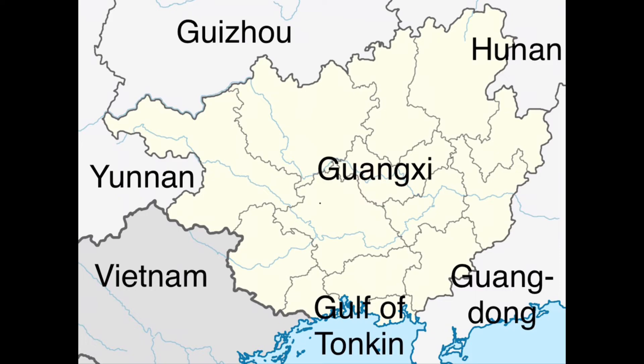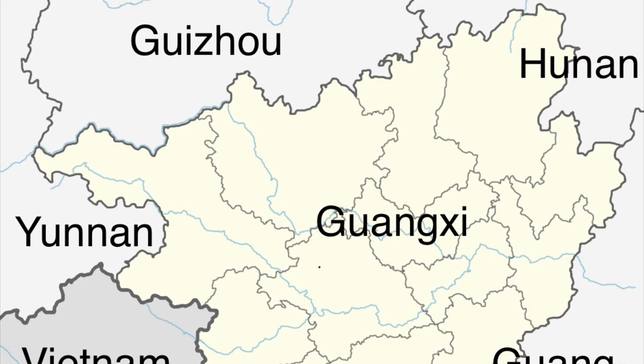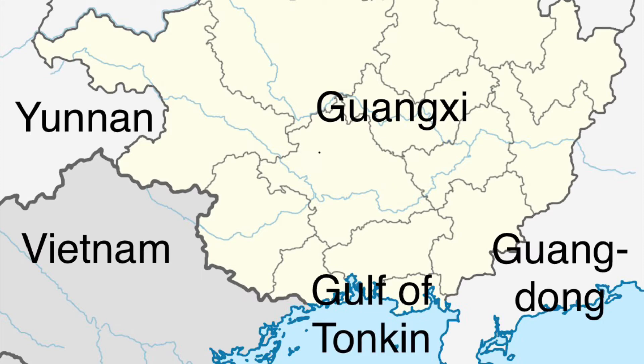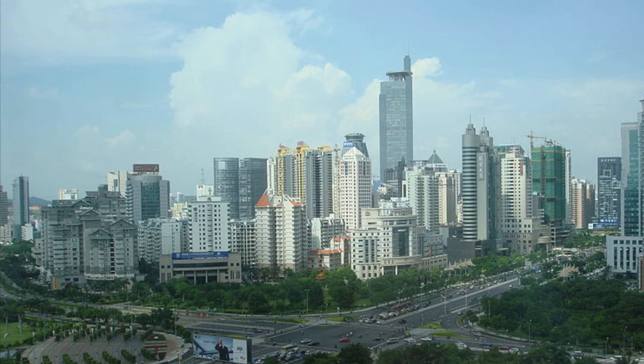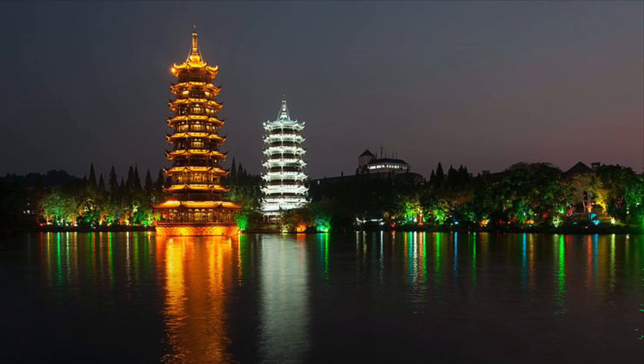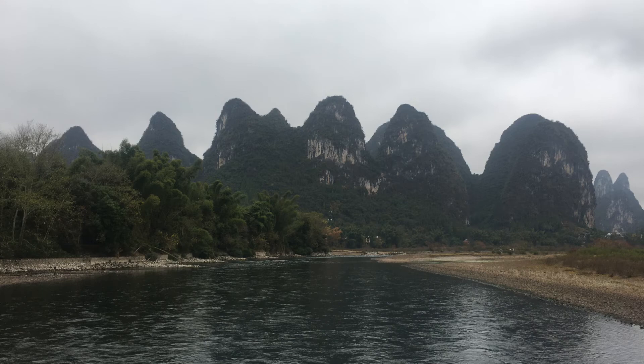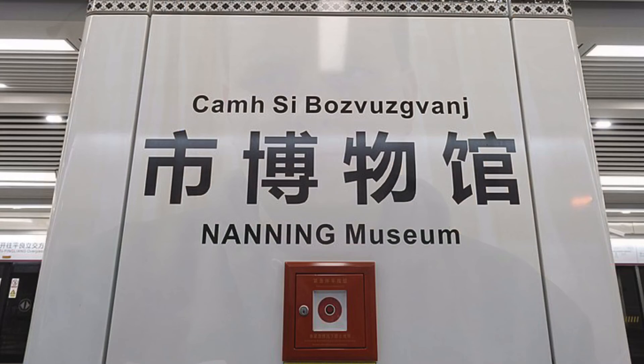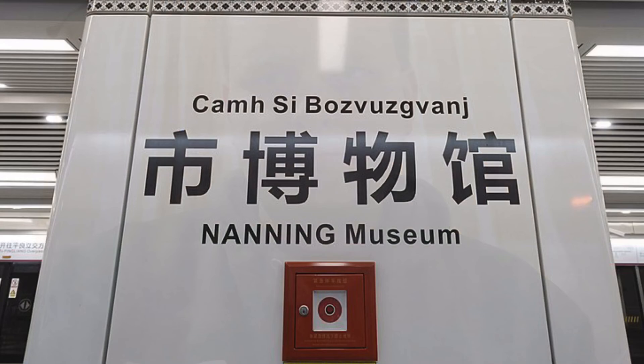Right next door, Guangxi is an autonomous region — the only one in southern China. It borders Yunnan to the west, Guizhou to the northwest, Hunan to the northeast, and Guangdong to the east. It also has an international border with Vietnam to the southwest and coastline on the Gulf of Tonkin to the south. Its capital and largest city is Nanning, and another well-known city is Guilin to the north, famous for its beautiful karst landscapes along the Li River, making it one of China's most popular tourist attractions. As an autonomous region, Guangxi is officially designated for the Zhuang ethnic minority, so the Zhuang language is officially recognized there and you will see signage in both Chinese and Zhuang.